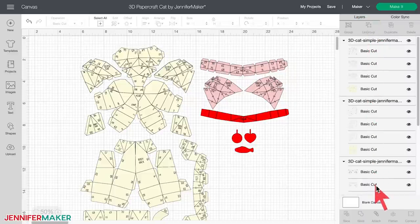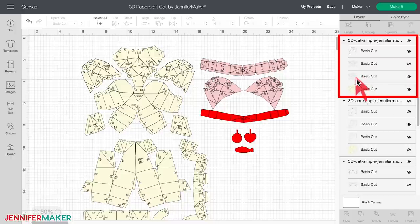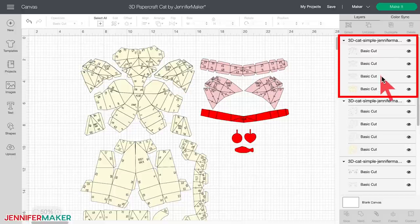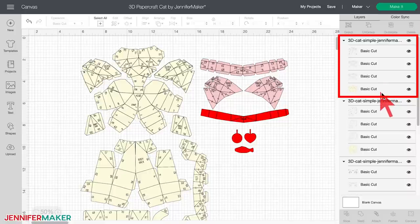In each of the groups, you will see two or more layers. In this paper craft pattern, there are four layers. Now, not all paper craft patterns will have this many layers. Some will just have two, score and cut. But I added these extra layers to make it extra easy for you to assemble.